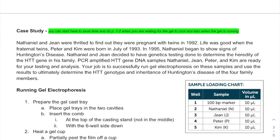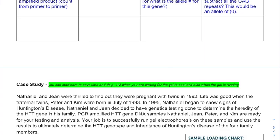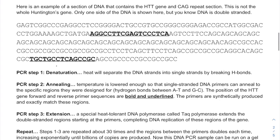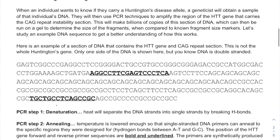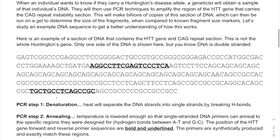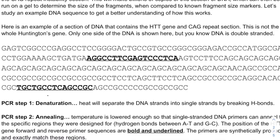Before we analyze the gel electrophoresis products, we have to first understand what's going on and how we're going to take those samples. If you obtain the DNA samples from Nathaniel, Gene, Peter, and Kim, what are we going to do with those samples and how are we going to identify the inheritance of Huntington's? Their DNA would be PCR amplified — polymerase chain reaction amplified — before we can run it on a gel. Prior to that, we'd have to have primers made.